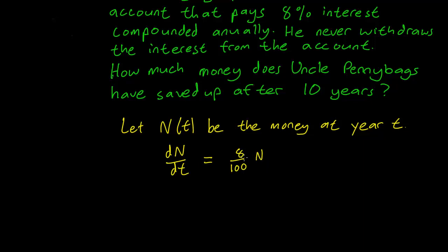That's what it means for interest to compound annually in this way. Every year he gets 8% of how much money is already in the account, and this is why it makes sense to write the equation this way.